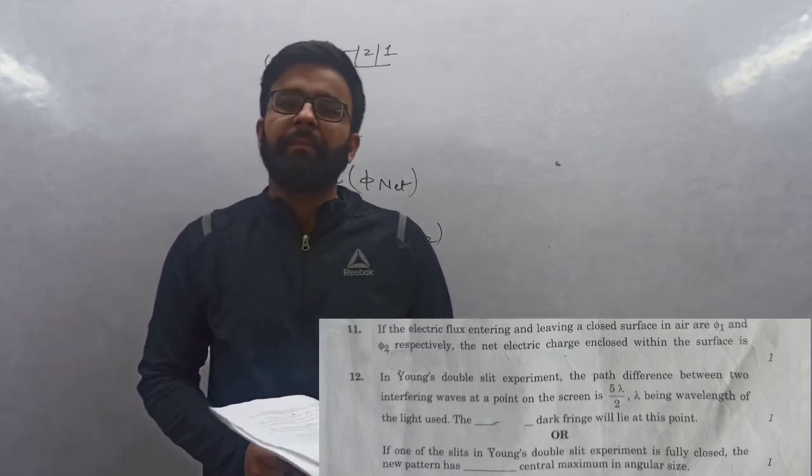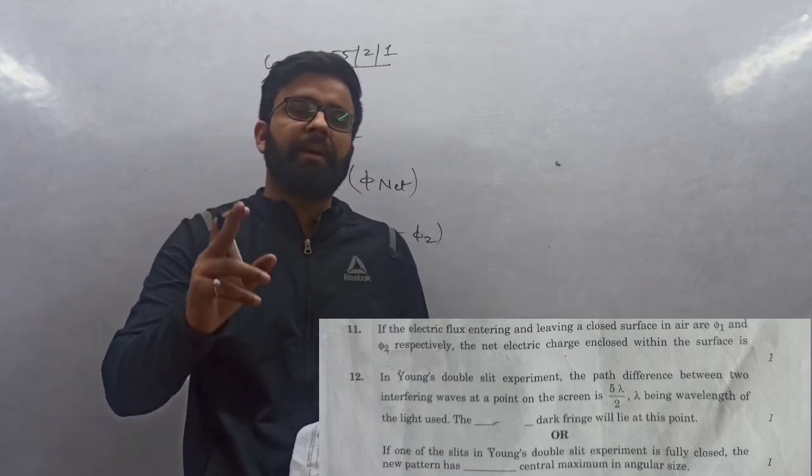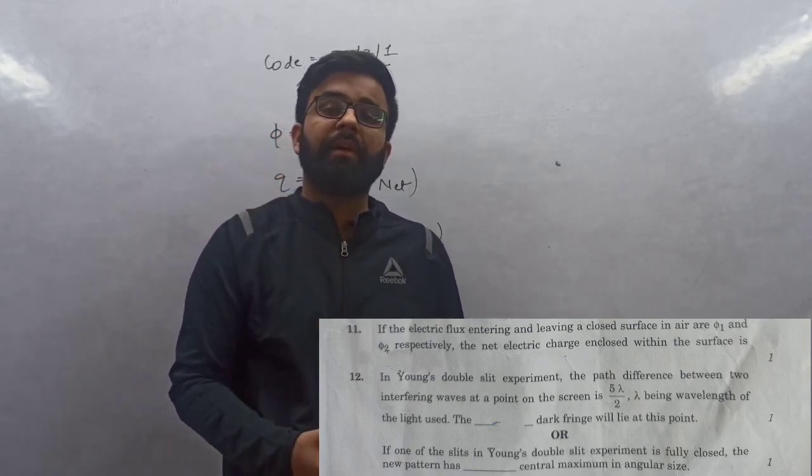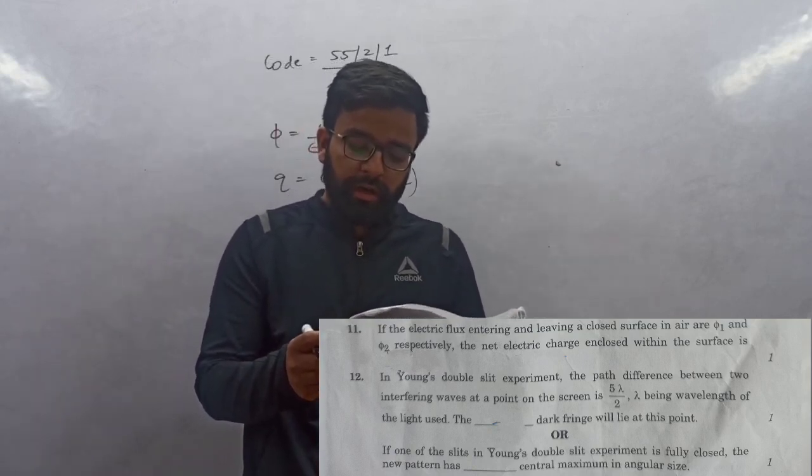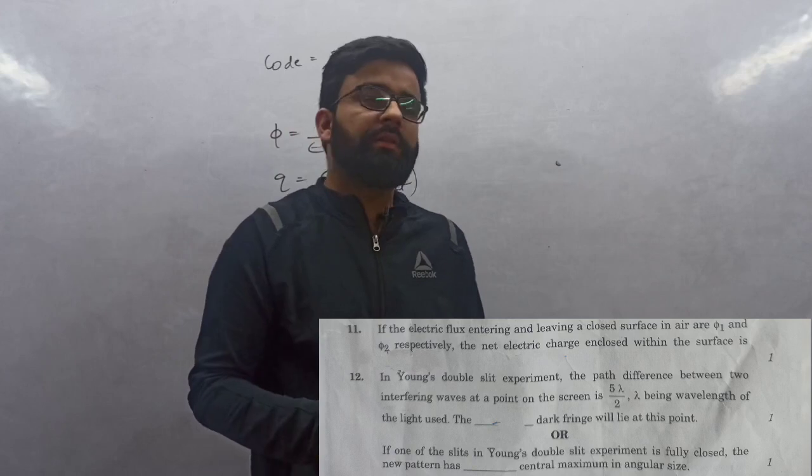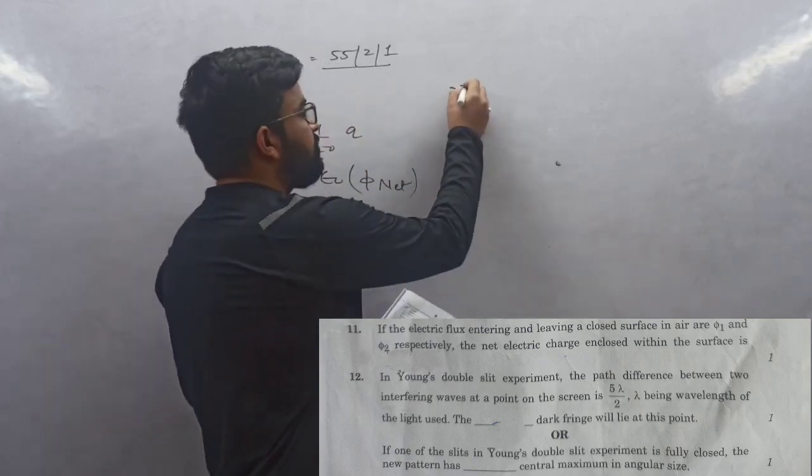Question 12: At 5λ/d, which dark fringe forms? First dark fringe at λ/2, second at 3λ/2, so third at 5λ/2. The answer is the third dark fringe will be at this point.